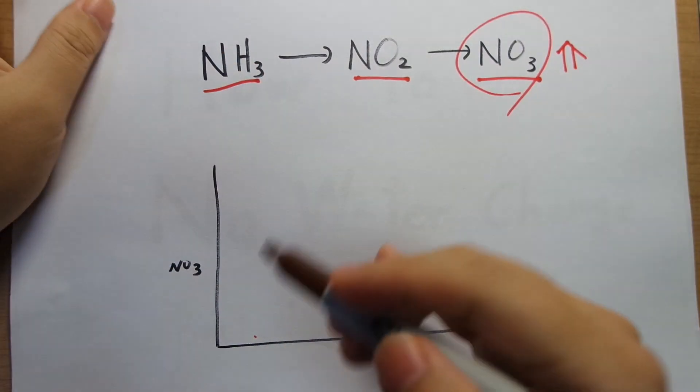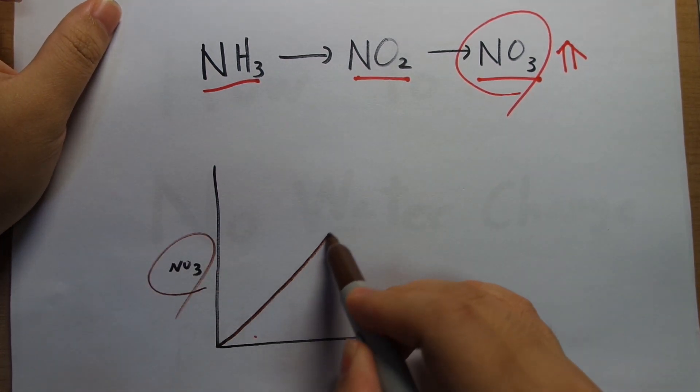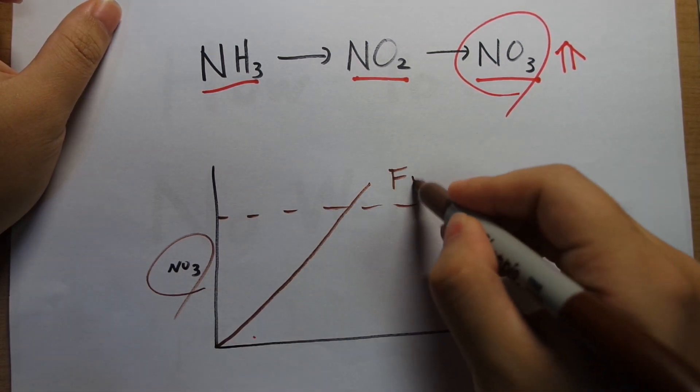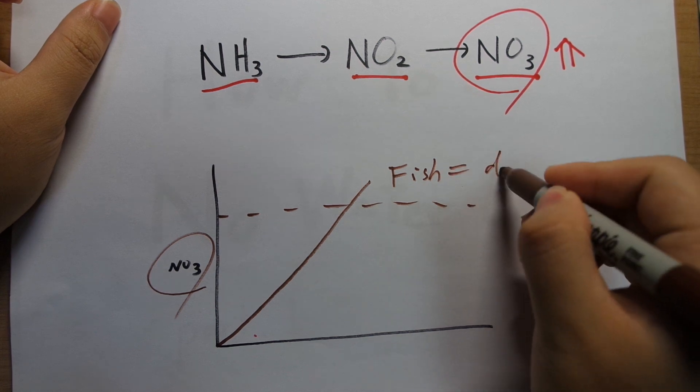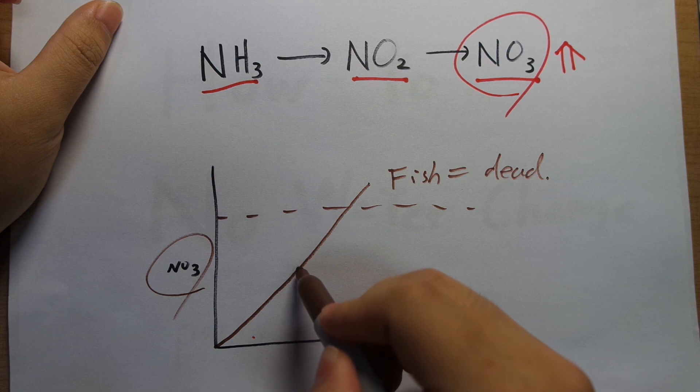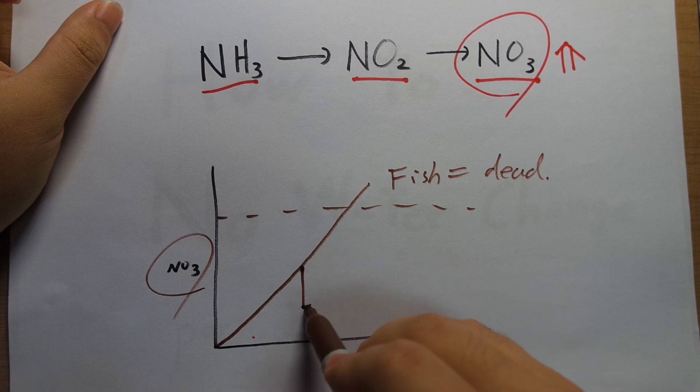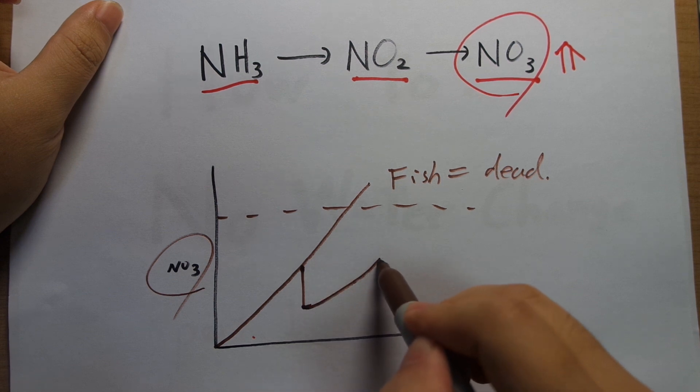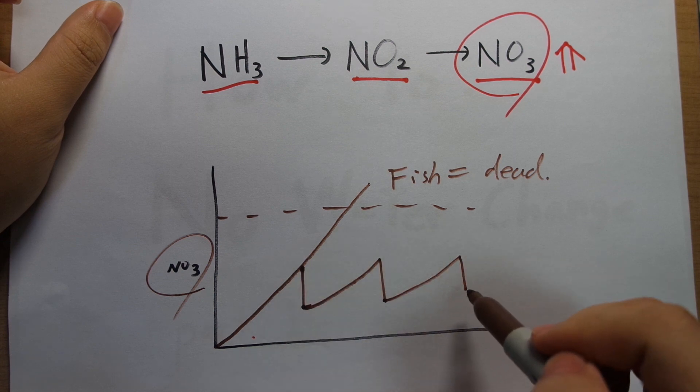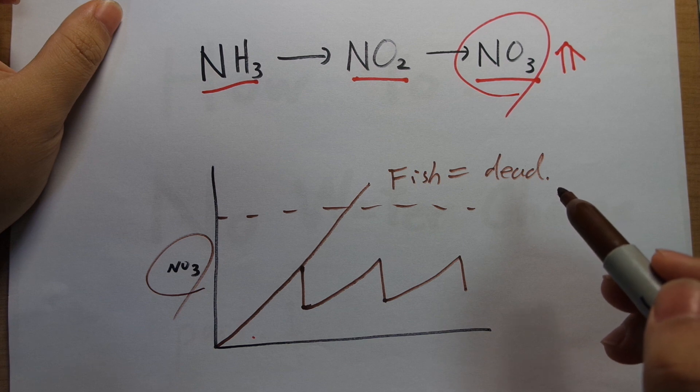So what happens is your nitrate levels as time goes by increases and increases and eventually it's going to reach a point where your fish are dead. So before that happens you do a water change that immediately reduces that level of nitrates. And then it slowly goes up again so you do another water change. You keep doing that to keep the nitrates at a low range where your fish are not dying. That is the conventional understanding of why you need to do water changes.